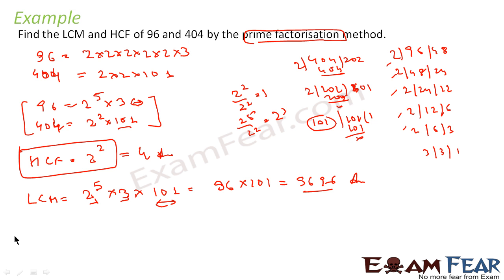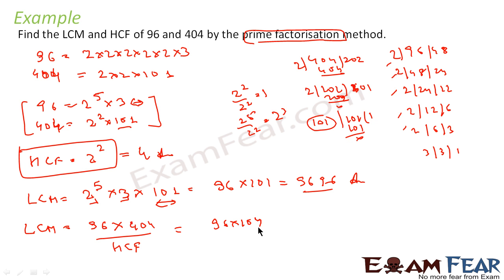There is also an alternative method to find LCM when you have only two numbers: multiply both numbers together and divide by the HCF. So LCM = (96 into 404) divided by HCF of 4 = 96 into 101. That is the same answer. Note: this formula works only for two numbers — for three numbers it does not apply.